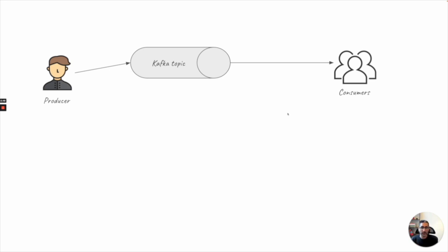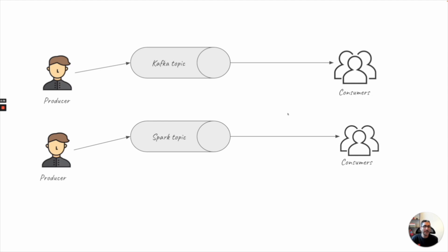In this example, a producer produces some data to a Kafka topic, and that Kafka topic immediately receives that message and gives it to the consumer. We can have the same example with a Spark topic — the producer produces a message to a Spark topic, and consumers subscribed to that topic get that information. But this happens in real time. The data exchanged between producers and consumers doesn't have a delay of hours or days. Let's define real time — it does not mean it happens at the speed of light.